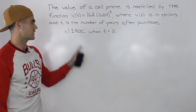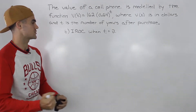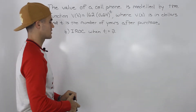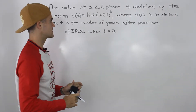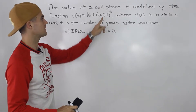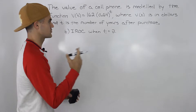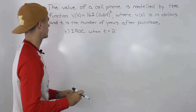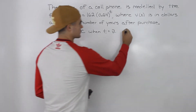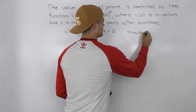Moving on to Part B, we have to find the instantaneous rate of change when the phone is two years old, so at a T value of two. There are a couple of different ways we can do this. Notice we're dealing with an exponential function, so we'll have to do one of the interval methods — preceding interval, following interval, or centered interval. Let's just do the centered interval method for this one.